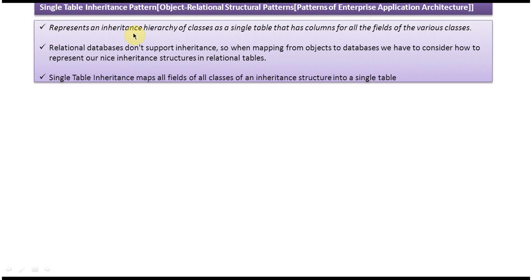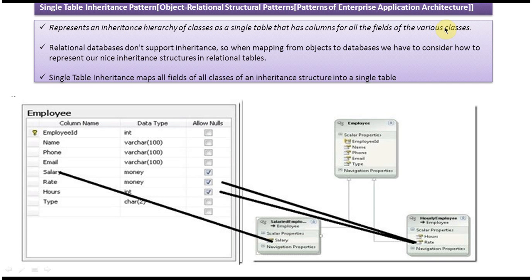The Single Table Inheritance pattern represents an inheritance hierarchy of classes as a single table that has columns for all the fields of the various classes. As an example, on the right side you can see three classes: the Employee class, the SalariedEmployee class, and the HourlyEmployee class. Employee is the superclass, and SalariedEmployee and HourlyEmployee are subclasses that inherit from Employee. The Employee class has the following fields: employee ID, name, phone, email, and type.